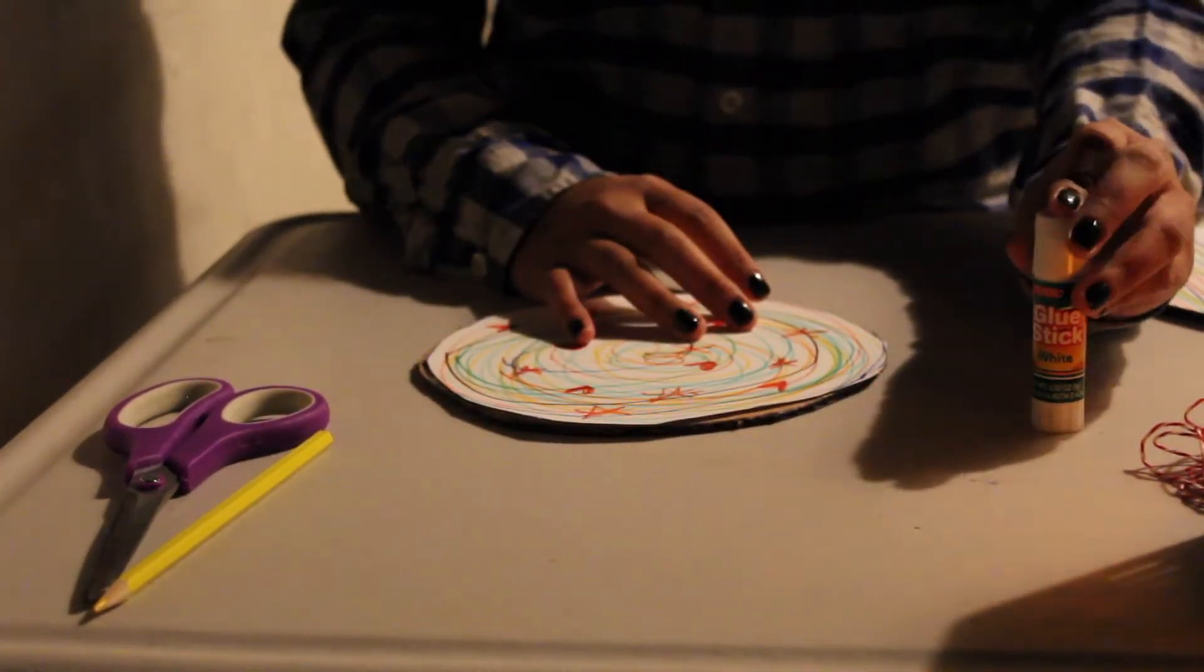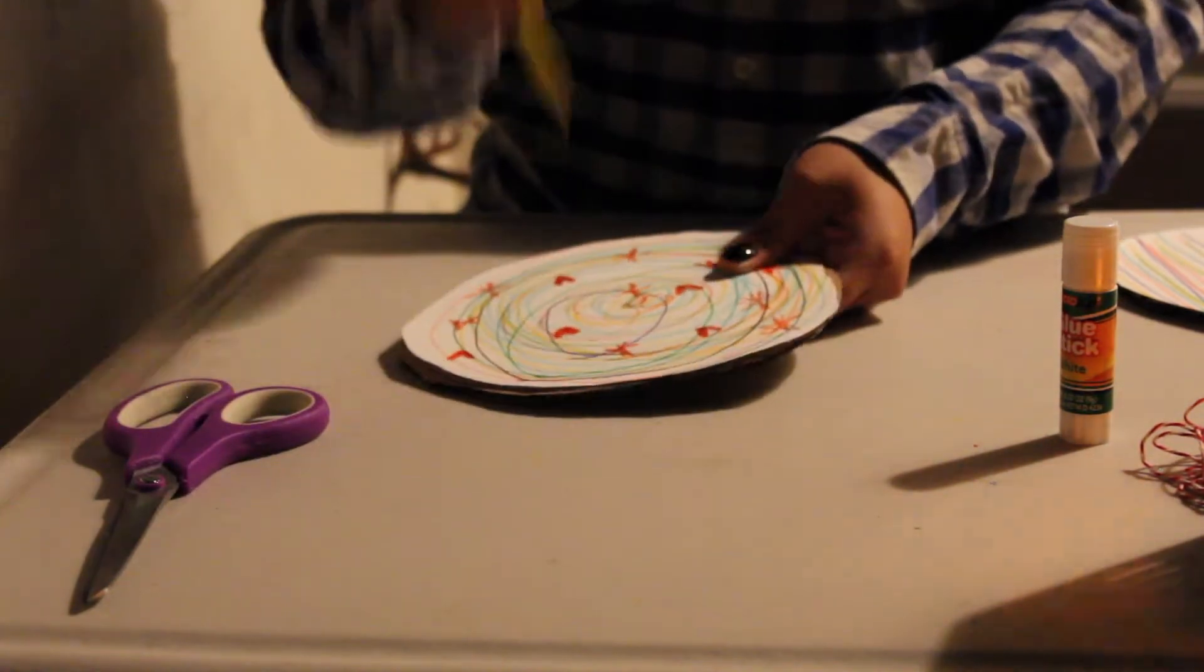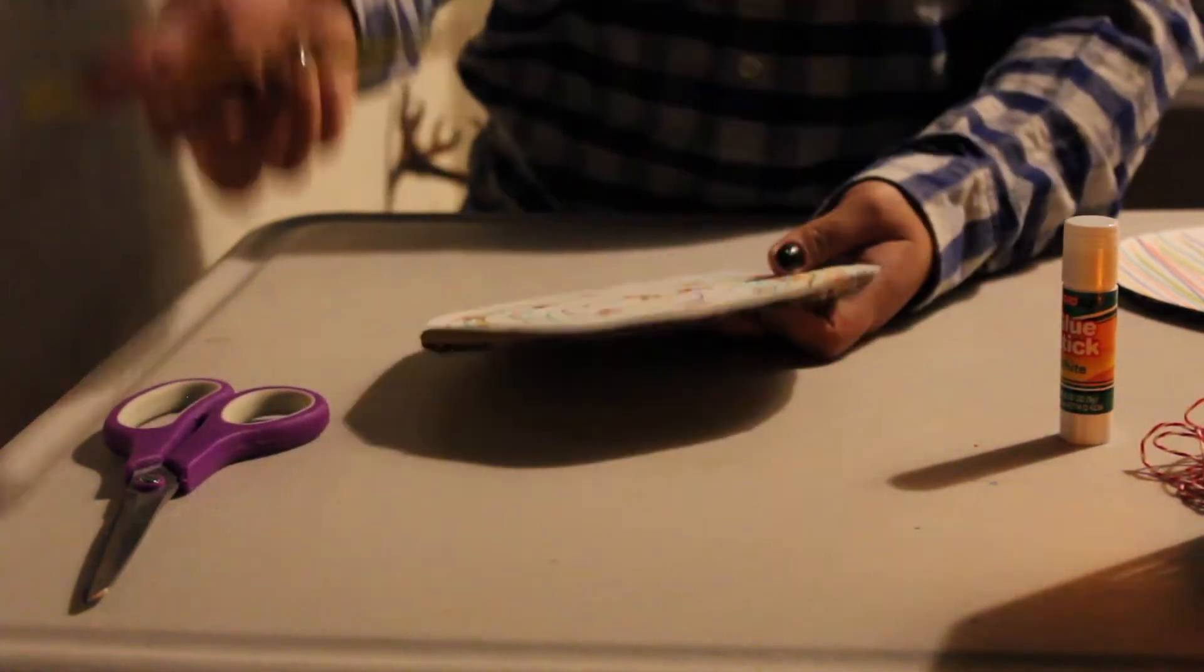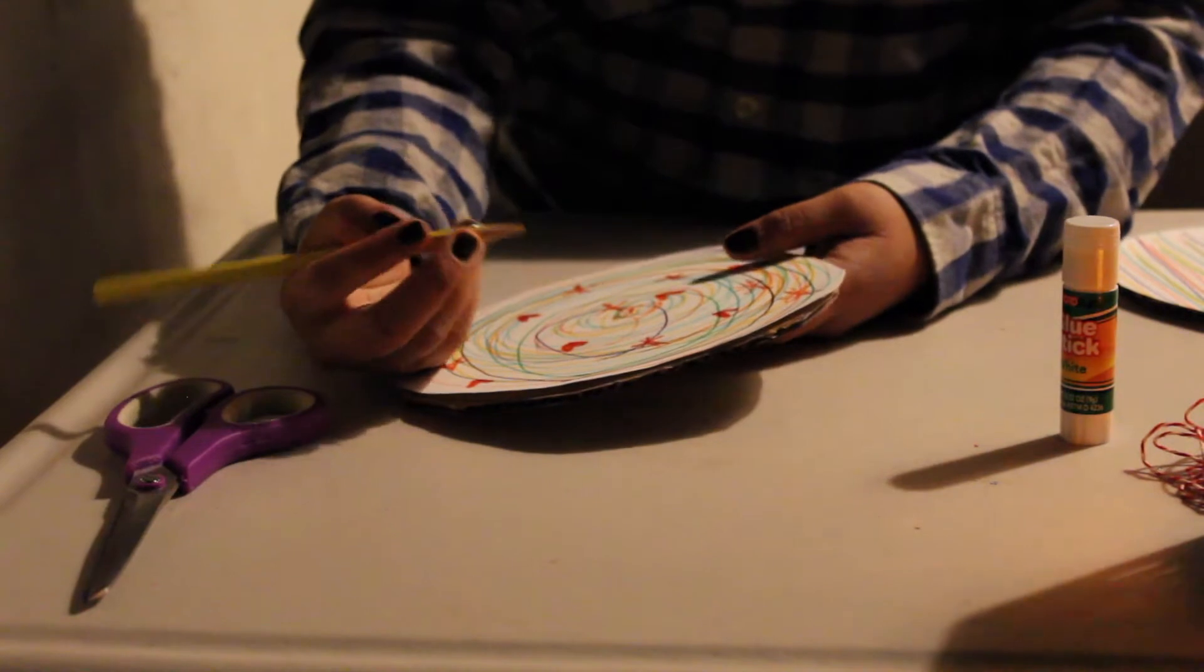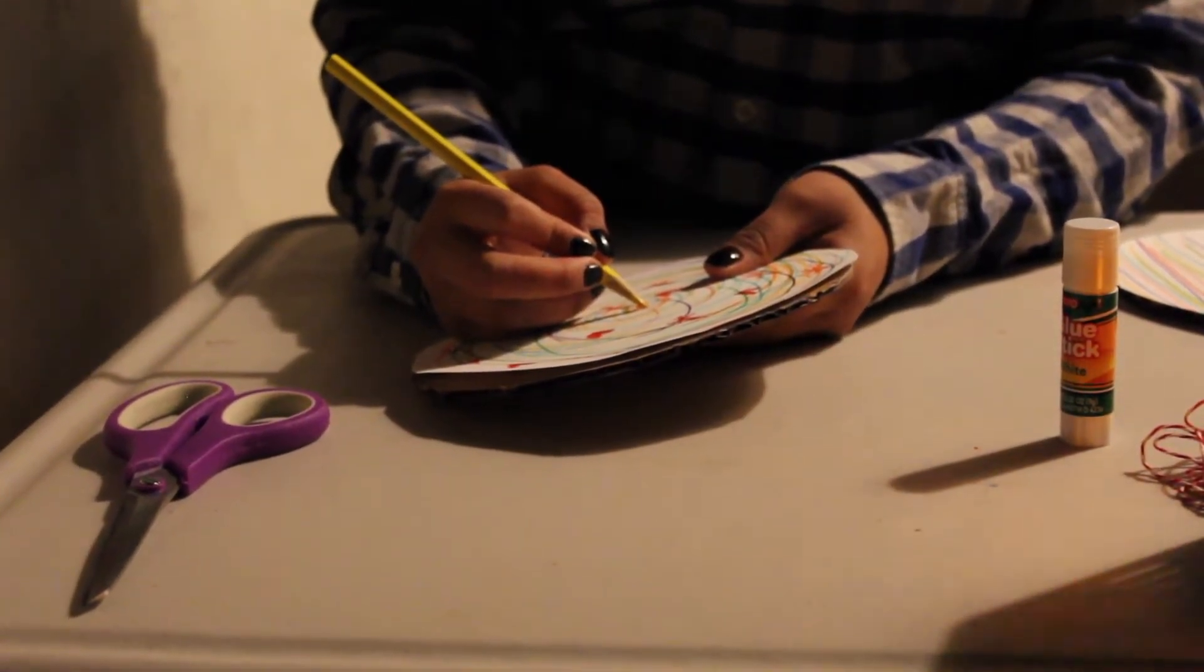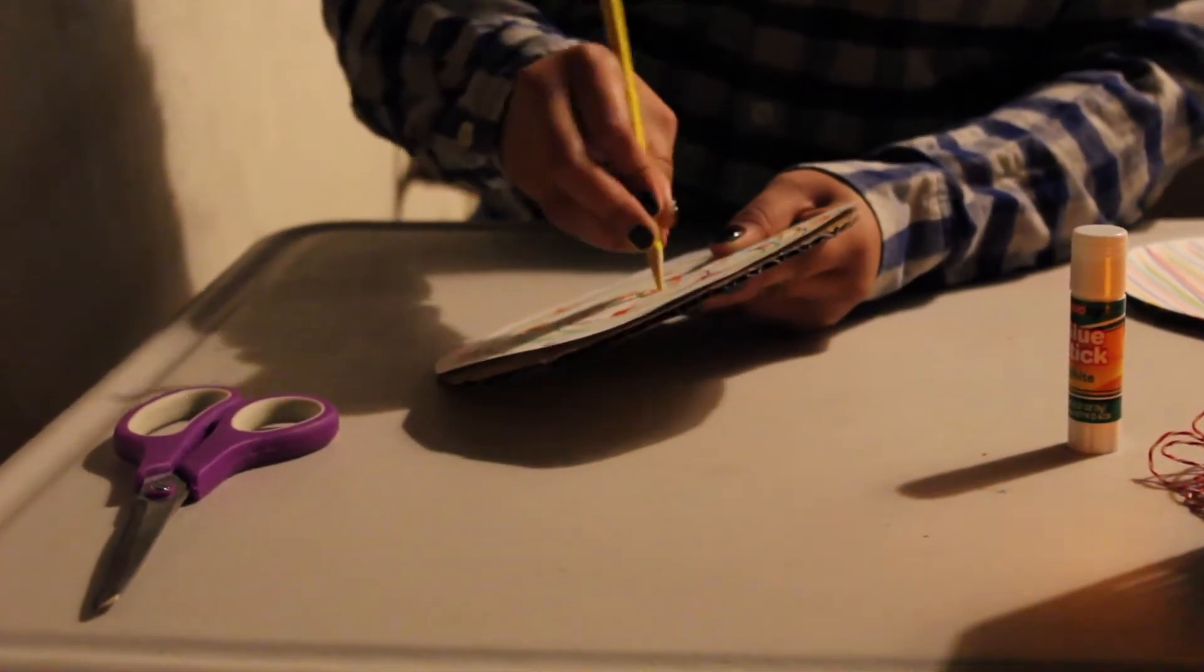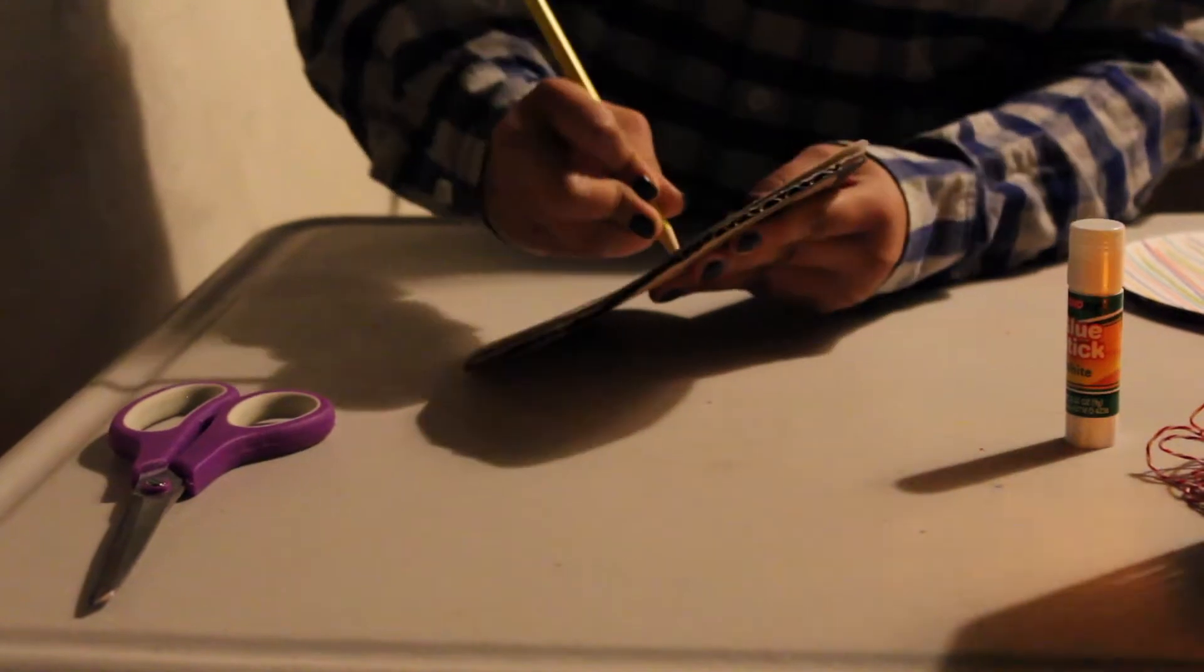All right, so now that I'm all done gluing my paper onto my cardboard circle, I'm going to poke two holes onto our circle. So it's actually kind of hard to poke a hole through with a colored pencil. And remember, if you are having a bit of trouble, go ahead and ask an adult for help. I was actually struggling a bit with this.